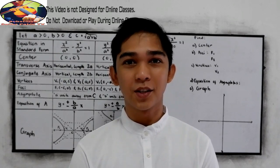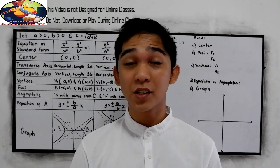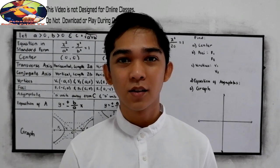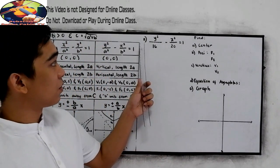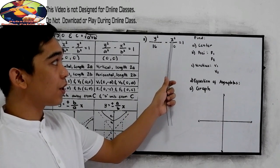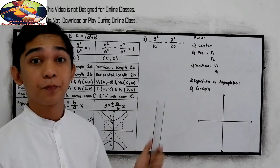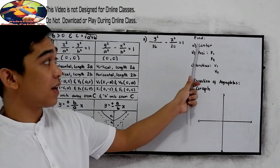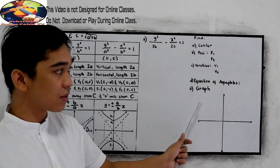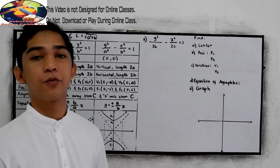Welcome to Senior Pablo TV. We have our second example for the hyperbola. So y squared over 16 minus x squared over 20 is equal to 1. We're going to find the center, the foci, the vertices, equation of asymptotes, and the graph.